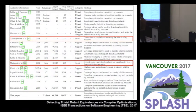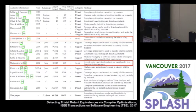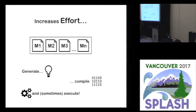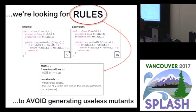In the same paper, they revealed some solutions for useless mutants. The majority of the solutions try to detect the mutants after they are generated — you have to generate a mutant, compile it, and execute some program analysis to detect if the mutant is useless or not. Only two works try to avoid the mutant before it is generated. We think that if you try to detect the mutant after generation, it increases cost because we need to generate the mutant, compile it, and sometimes execute the test suite. In this work, we are looking for rules to avoid generating useless mutants.